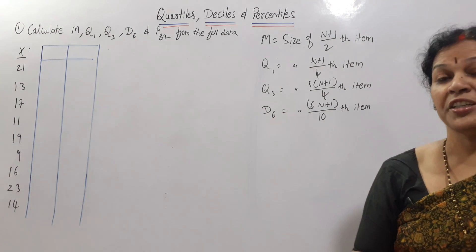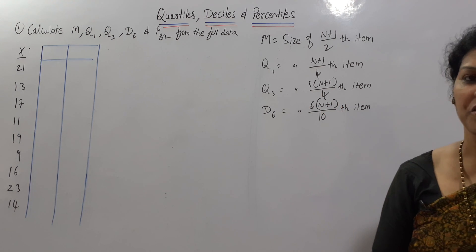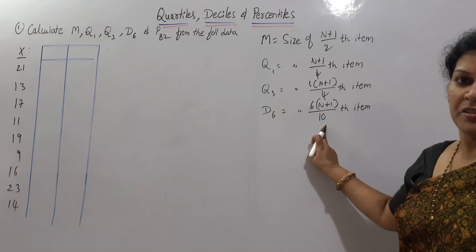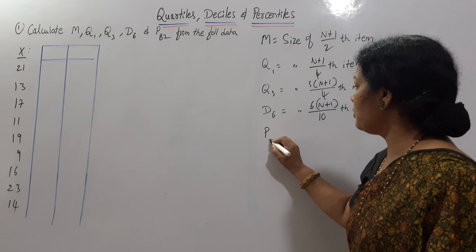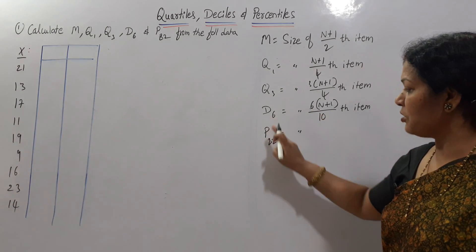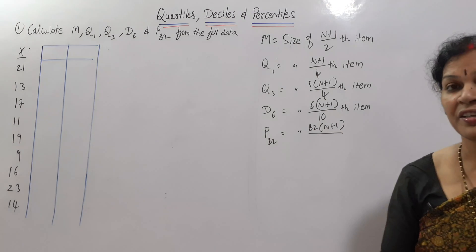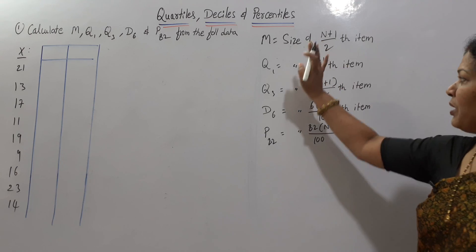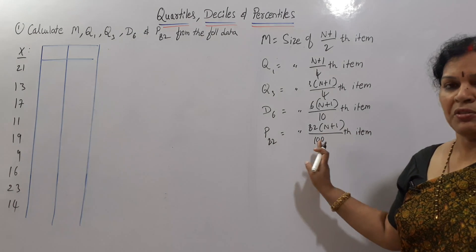For D6, the formula is: 6 into n plus 1 by 10th item. P82 means percentile 82 — percentile divides by 100. So the P82 formula is: size of 82 into n plus 1 by 100th item. Let's get started with the problem.